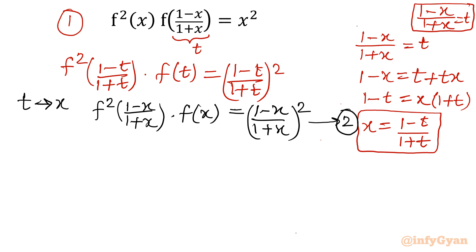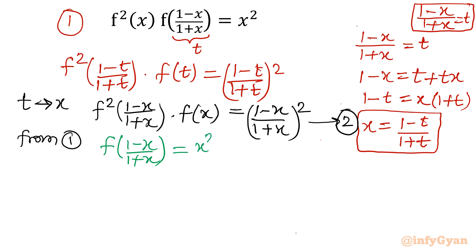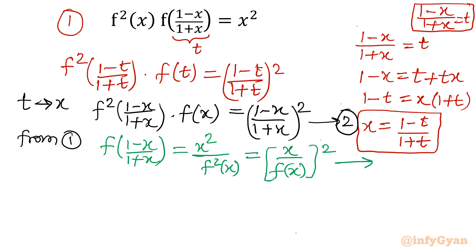Now, I will find f of (1 minus x)/(1 plus x) from equation 1. From equation 1, dividing both sides by f squared of x, we get f of (1 minus x)/(1 plus x) equals x squared over f squared of x, which I can write as (x / f(x)) squared. Let us consider this equation 3.